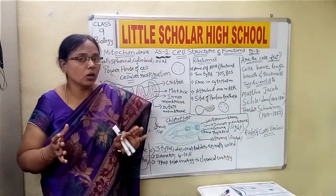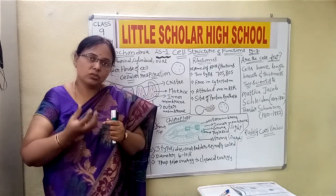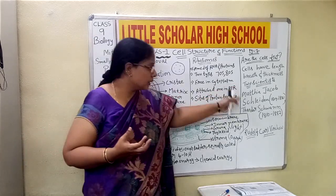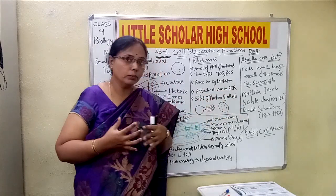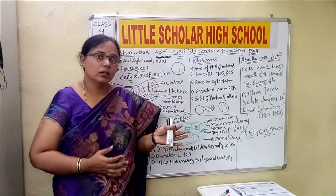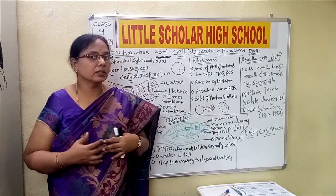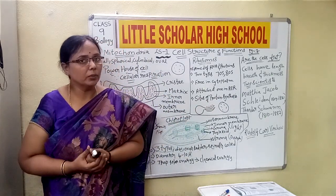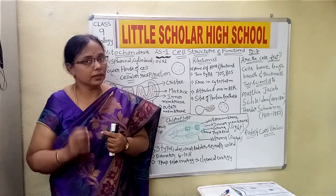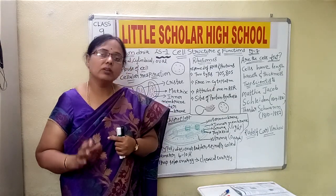Theodor Schwann is a zoologist — someone who deeply studies the structure and functions of animals. These two scientists came together and studied the cell structure present in both plants and animals, then proposed the cell theory, stating that all organisms are made up of cells.